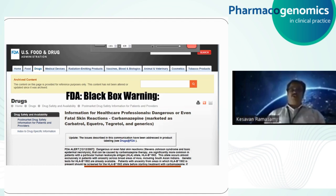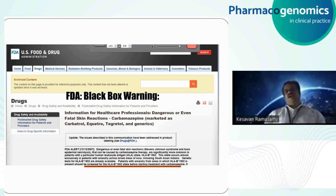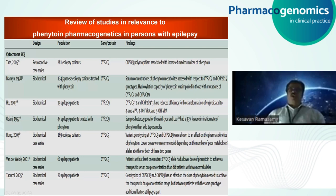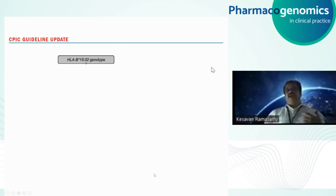Regarding neurotoxicity, the FDA has come with labeling changes — after all this research, it clearly mentions that phenytoin metabolism is genetically determined by CYP2C9 enzymes. As evidence has been gathered from different studies in different populations, labeling changes have happened, and guidelines from the CPIC group — the Clinical Pharmacogenomics Implementation Consortium — are now available. These guidelines advise clinicians on how to proceed for patients taking phenytoin or carbamazepine.